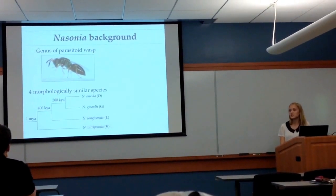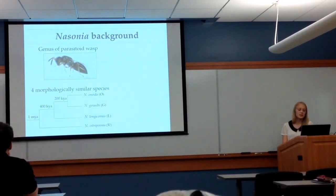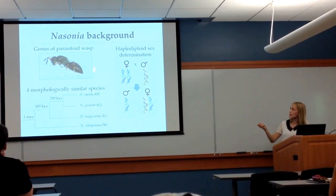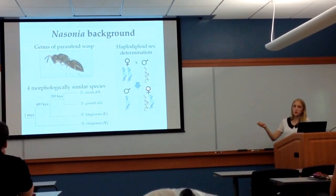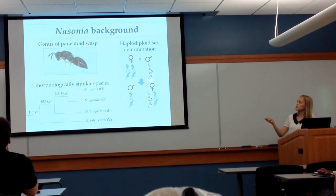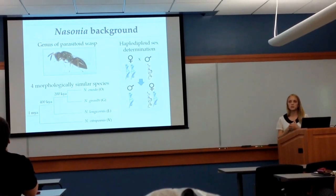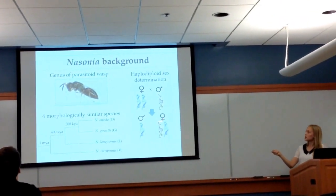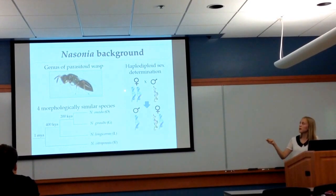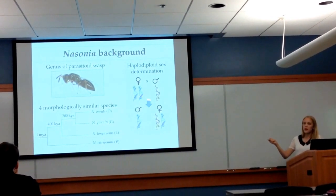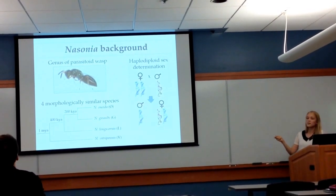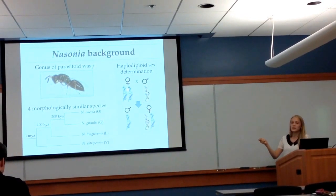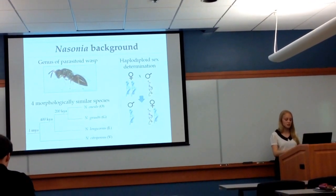Another very important characteristic of Nasonia is that they have haplodiploid sex determination. Females have two copies of each chromosome and are diploid, while males are haploid, meaning they have one copy of each chromosome. When a male and female mate, each daughter gets one copy of each chromosome from the mother and one from the father. But sons only get one copy of each chromosome from the mother — meaning, essentially, they don't have fathers.